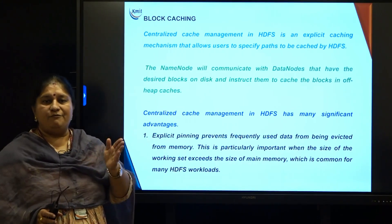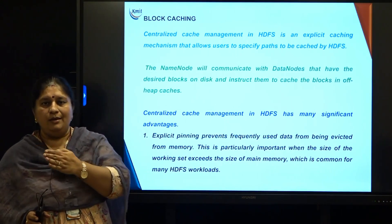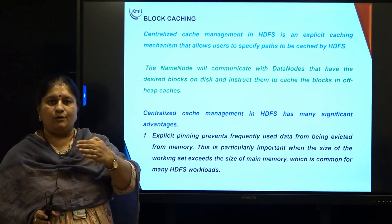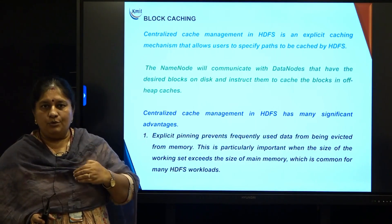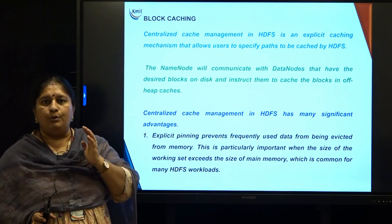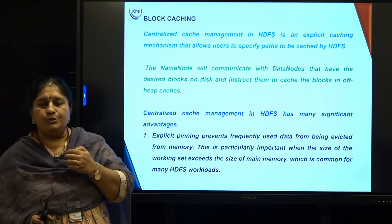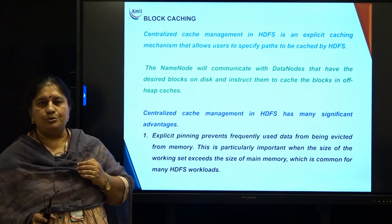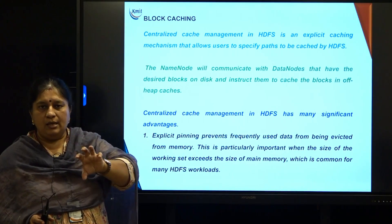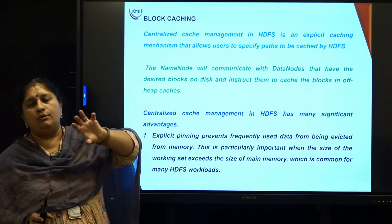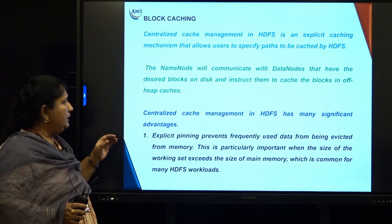As mentioned previously, the name node consists of metadata and the data node consists of the actual business data. The name node communicates with the data node and tells it which blocks to cache and which to remove. For example, if my file is divided into three blocks A, B, C spread across data nodes 1, 2, 3, the name node may want to keep block B on data node 2, so it communicates to data node 2 saying: please put block B in off-heap cache memory.